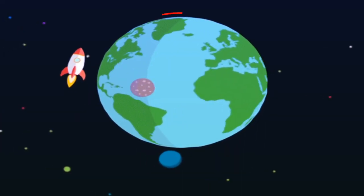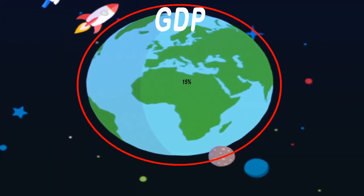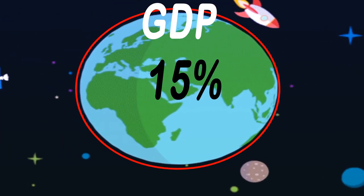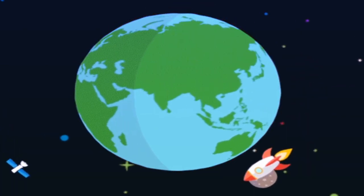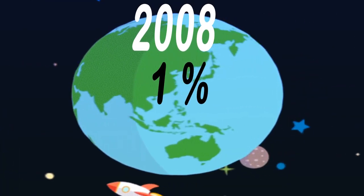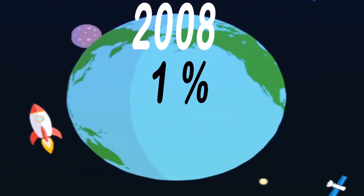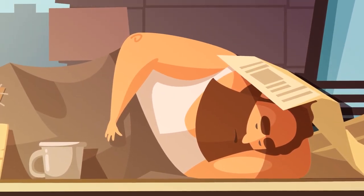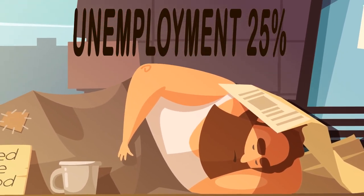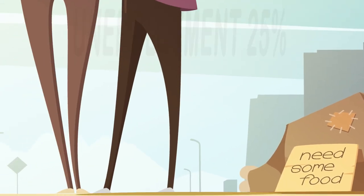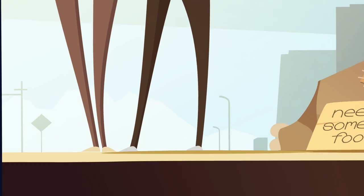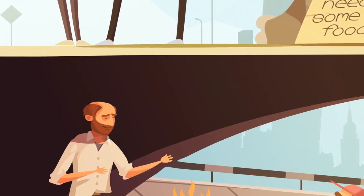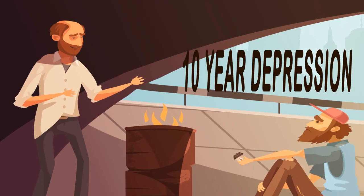The Great Depression — the time when worldwide GDP fell by 15%, compared to the recent 2008 crash where world GDP only fell a teeny tiny 1%. The time where unemployment in the US rose up to 25% and people experienced the most extended economic downturn, which stretched for a decade.